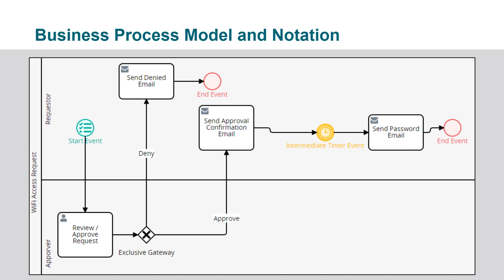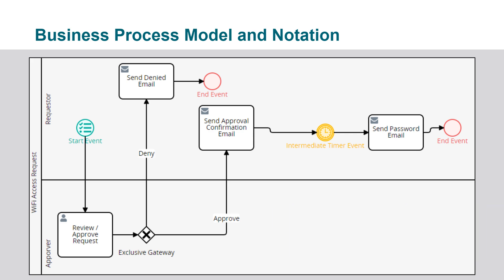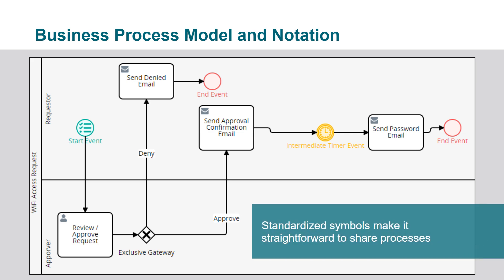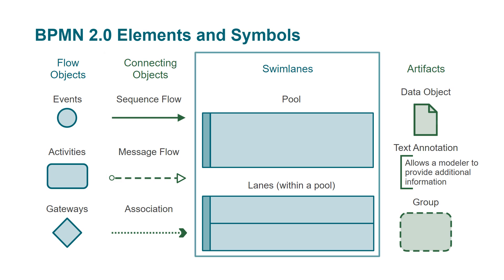To provide consistency, Workflow 2.0 supports Business Process Model and Notation standards known as BPMN 2.0. The addition of these standards will help stakeholders better understand processes through this universally understood language. Simply put, the standardized use of these shared symbols makes it straightforward to share processes. The BPMN 2.0 elements and symbols fall into four main groups: flow objects, connecting objects, swim lanes, and artifacts.